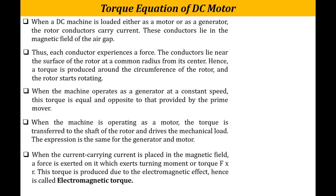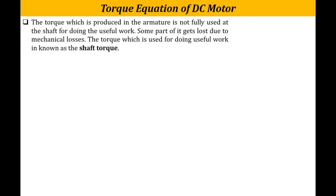Whenever any current-carrying conductor is placed in a magnetic field, a force is exerted on it, and because of that force the conductor starts rotating. Whatever torque is developed is nothing but F into R, where F is the force and R is the perpendicular distance. This torque is produced because of the electromagnetic effect and is called electromagnetic torque. The torque produced in the armature is not fully utilized by the shaft — some part is lost due to mechanical losses. The torque used for doing useful mechanical work is called shaft torque.